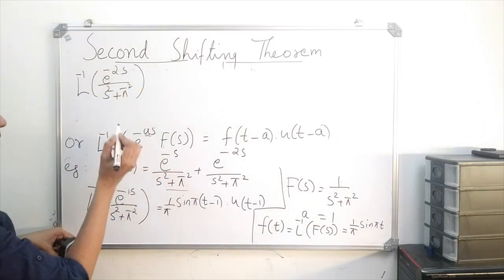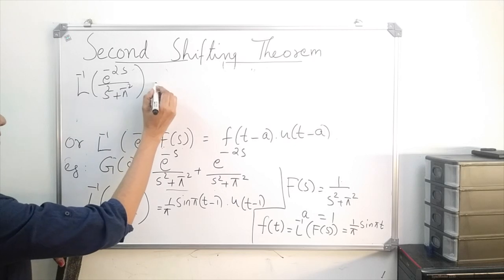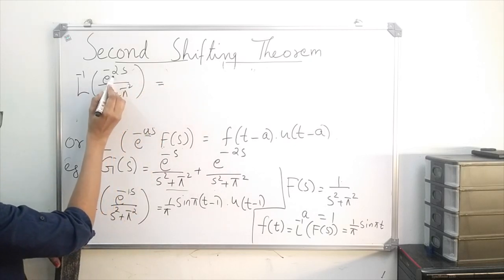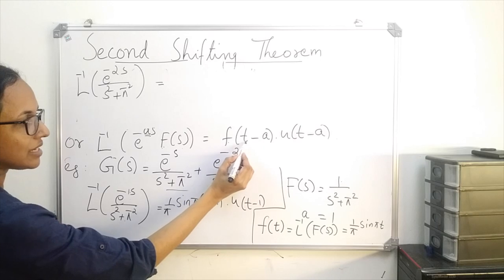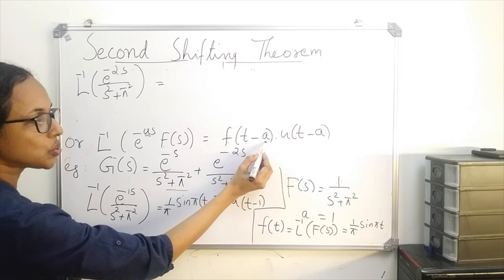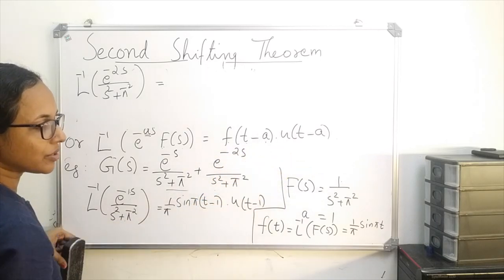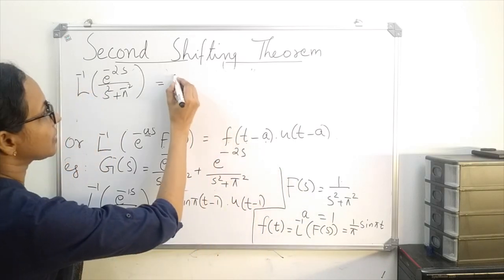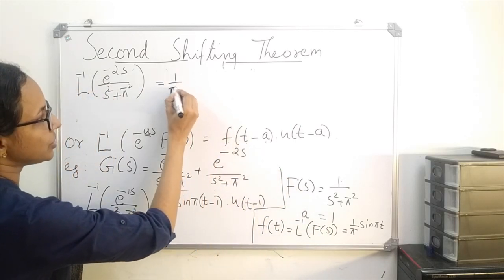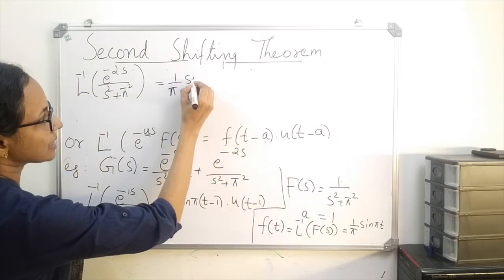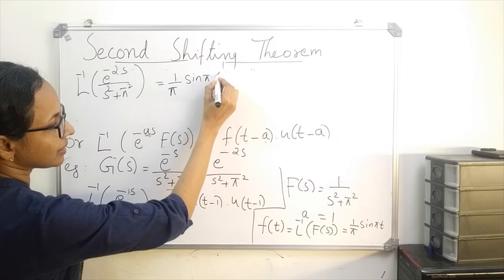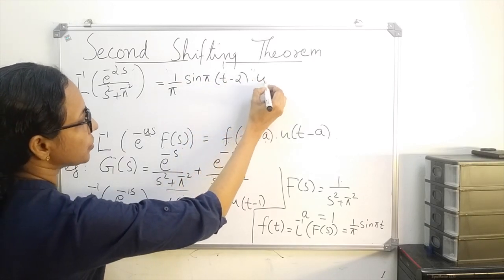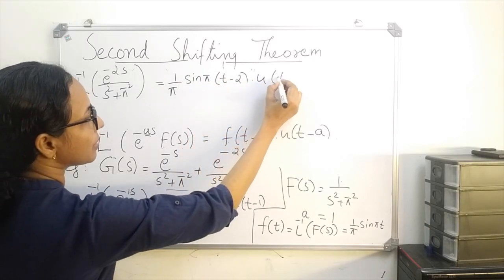Applying the theorem, here the value of a is 2. Therefore the inverse is f of t minus 2 times u of t minus 2, which gives 1 over pi times sin of pi times (t minus 2) times u of t minus 2.